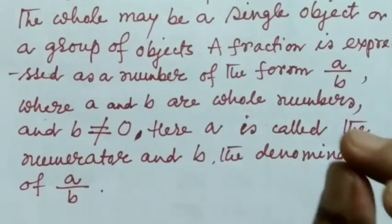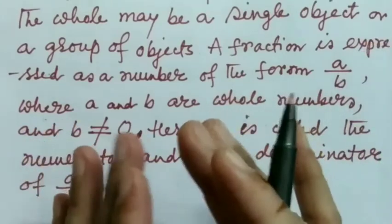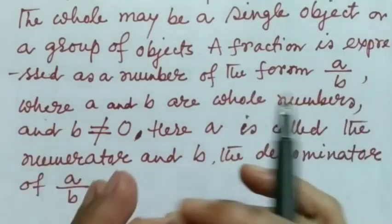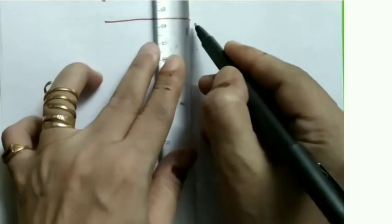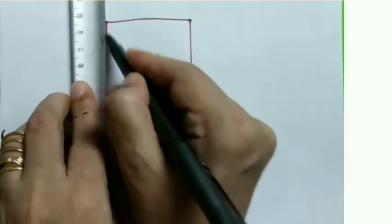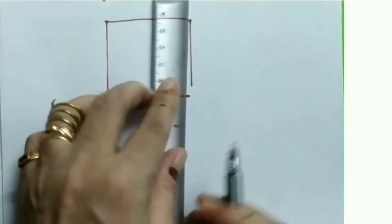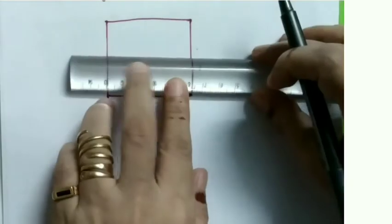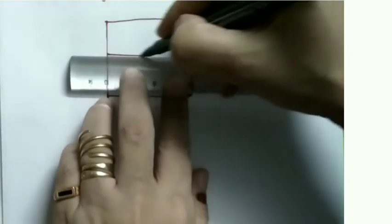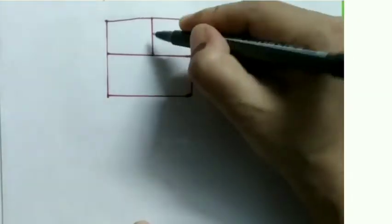One small part is missing and I'm going to show you what is that missing part. Suppose when I draw another figure, let me draw. Guys, please ignore my rough drawing because I am not at all good at drawing.